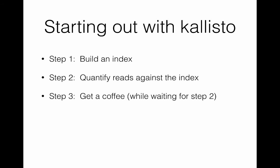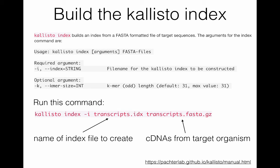So how do you use Kallisto? There are two main steps. Step 1 is to build an index, and step 2 is to quantify your reads against that index. Building the index proceeds as follows. Assuming you've already installed Kallisto on your machine, you would invoke it with the command kallisto index, then dash-i, where you give it the name of the index file to create, and then a transcripts.fasta file which contains cDNAs from your target organism. Doing this will take about 10 minutes to run, and then you'll have an index against which you can quantify your reads.